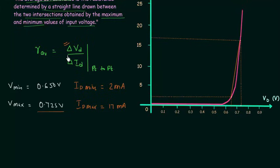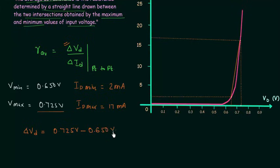First we will calculate ΔVd. ΔVd is equal to 0.725 volts minus 0.650 volts, and this is equal to 0.075 volts.